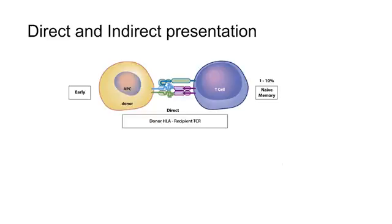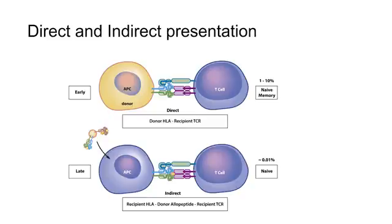However, since donor APC will disappear over time, this response will also diminish. In contrast, more time is required to start the indirect pathway of allorecognition. This pathway is dependent on the influx of recipient APC and the uptake of donor MHC to present specific allopeptides in the context of self MHC.